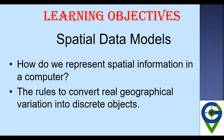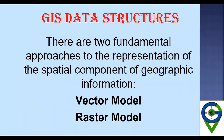Today's learning objective is how we represent spatial information in our computers and the rules to convert real geographical variations into discrete objects. In GIS, there are two fundamental approaches to the representation of the spatial component of geographic information. The real world is too complex for immediate and direct understanding, so we create models or abstractions of reality. A spatial database is a collection of spatially referenced data that acts as a model of reality.